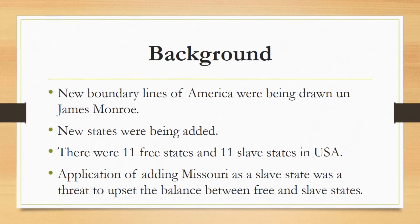Regarding the background of the Missouri Compromise: new boundary lines were being drawn during the presidency of James Monroe. The population of America at that time was 10 million. During this period of explosive growth, new states were being added almost every year, and the issue of slavery was increasingly dividing the nation. There were 11 free states and 11 slave states in the United States at that time.